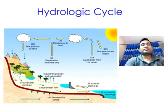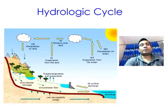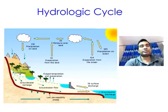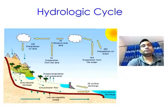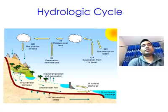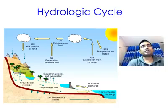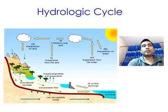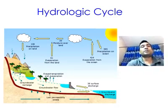As moisture rises, it cools. Eventually, enough moisture accumulates and causes droplets or snowflakes — precipitation. As they fall on the earth's surface, the droplets either run over the ground into streams and rivers, or percolate into the ground to form groundwater.